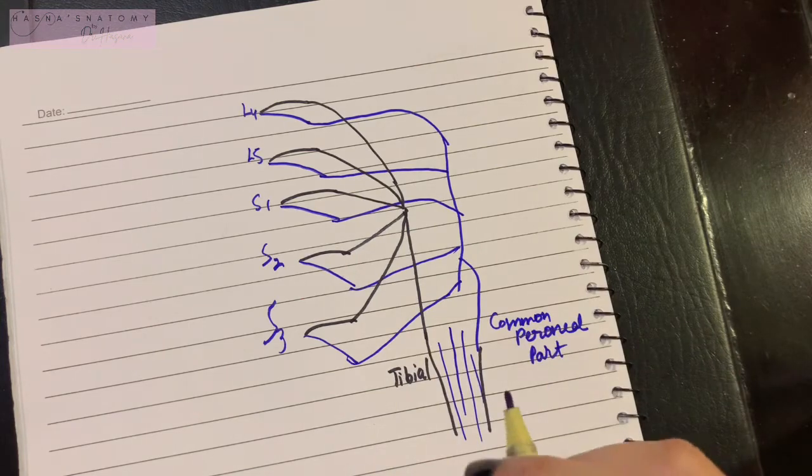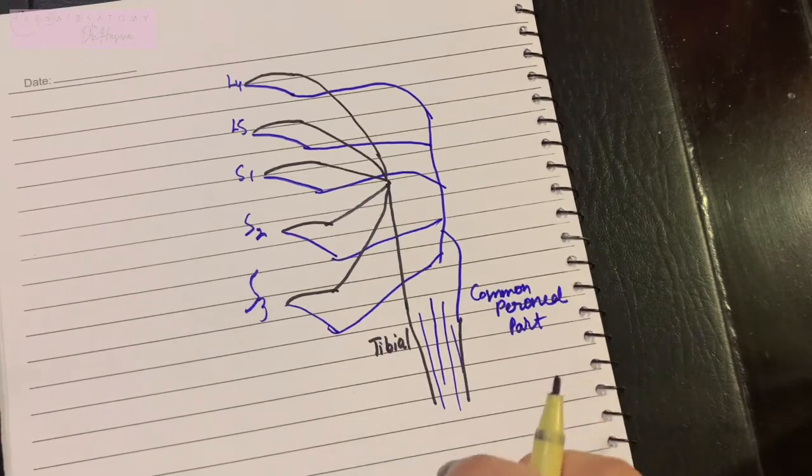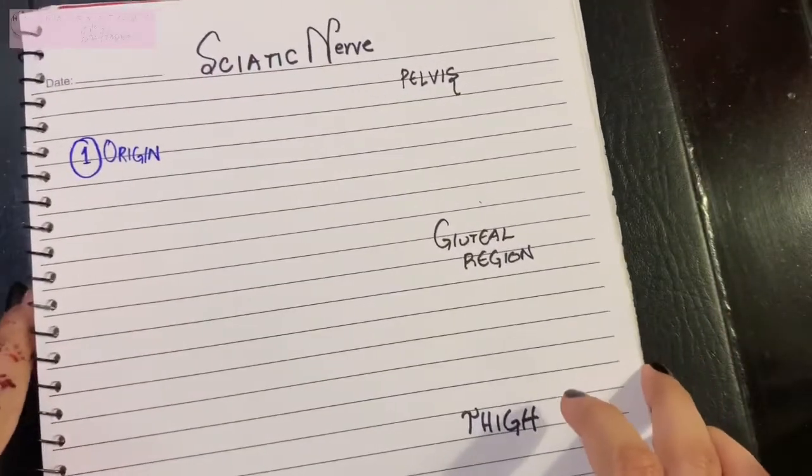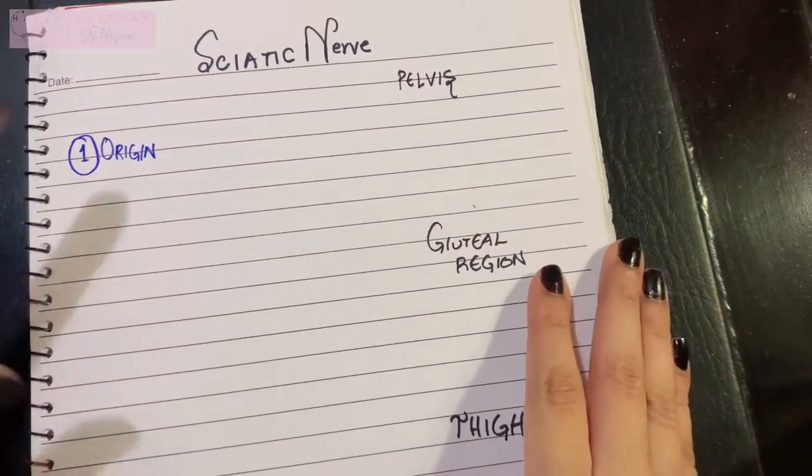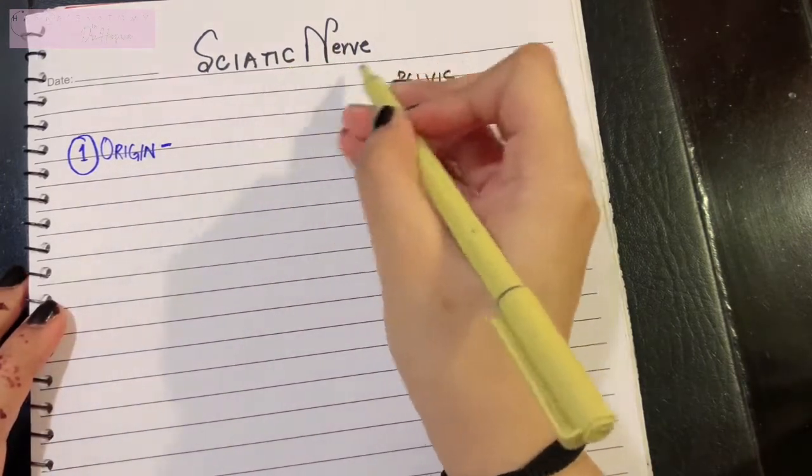The sciatic nerve is quite a very thick and large nerve that is the chief nerve supply of the back of your thigh, which consists of the hamstrings muscle. This was the origin of the sciatic nerve. Now what is the course of the nerve?